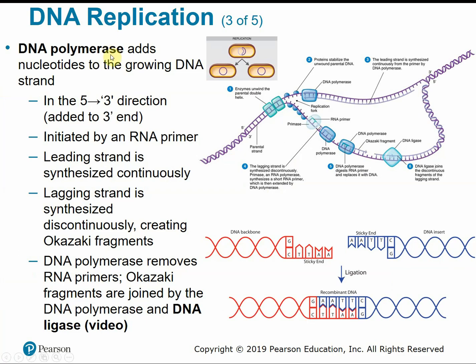DNA polymerase, another enzyme, adds new bases or nucleotides to the growing DNA strand. Nucleotides are added in the five prime to three prime direction — meaning they're added to the three prime end. The five prime end has the phosphate group attached; the three prime end doesn't, so that's where new bases are added. This process is initiated by an RNA primer, a temporary holding place that prepares the DNA strand and signals DNA polymerase where to begin adding nucleotides.